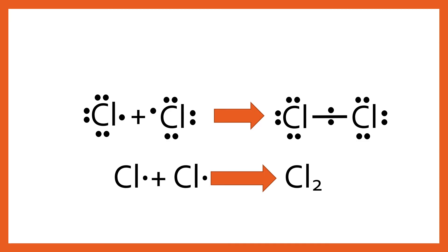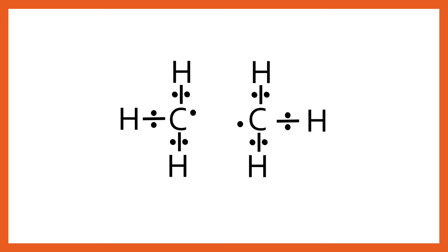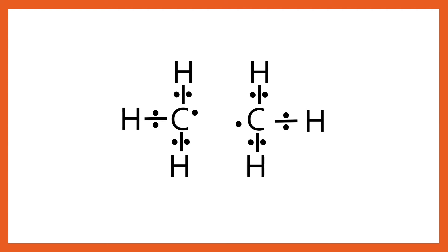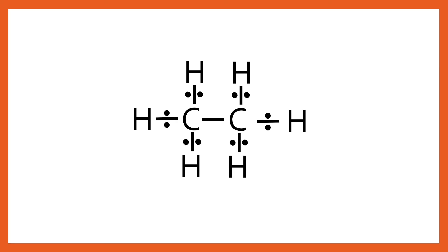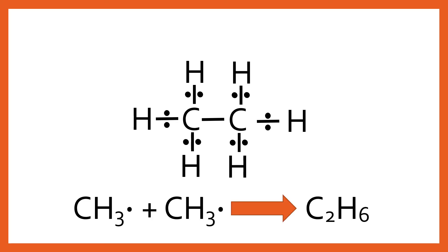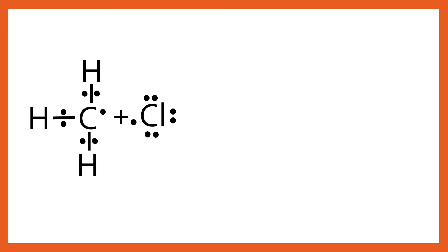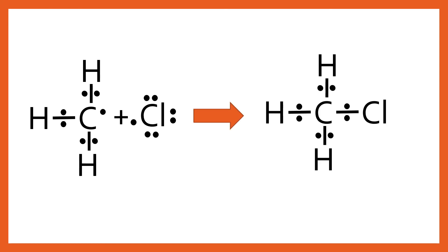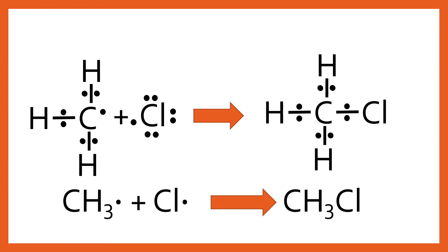We can also have two CH₃• radicals finding each other and joining together to form a covalent bond, producing the stable product C₂H₆. That soaks up two radicals and is therefore a termination step. Another possibility is a CH₃• radical and a Cl• radical combining — and when they form together you simply get your desired product, the haloalkane you wanted to make. This can be represented simply as showing the radicals combining to form the product. These are the main termination steps.